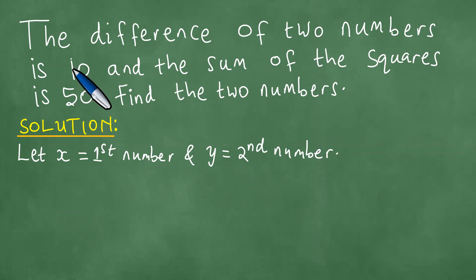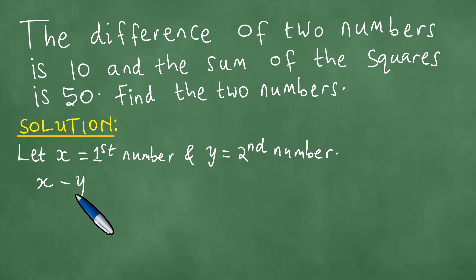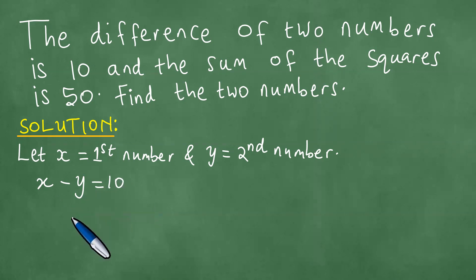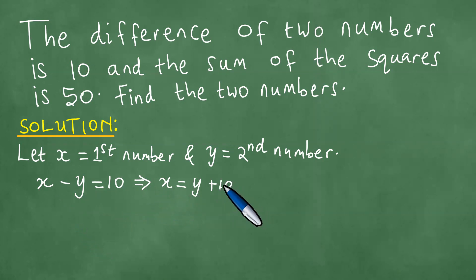Moreover, we have been told that the difference of the two numbers is 10. So we take the first number minus the second number and the result is exactly 10. This implies that x equals y plus 10 if we transpose the minus y to the right.